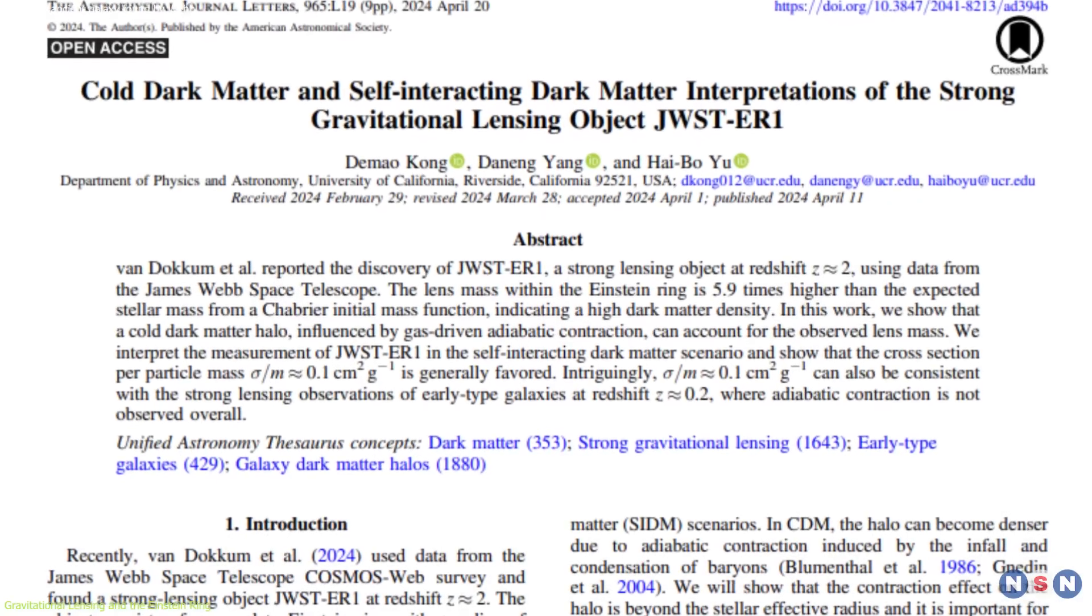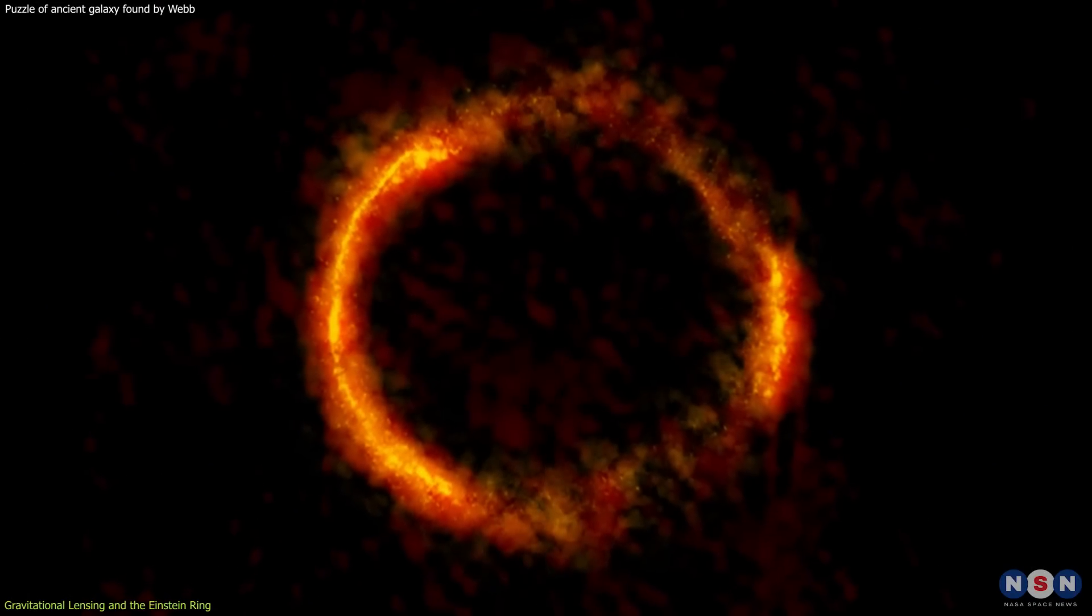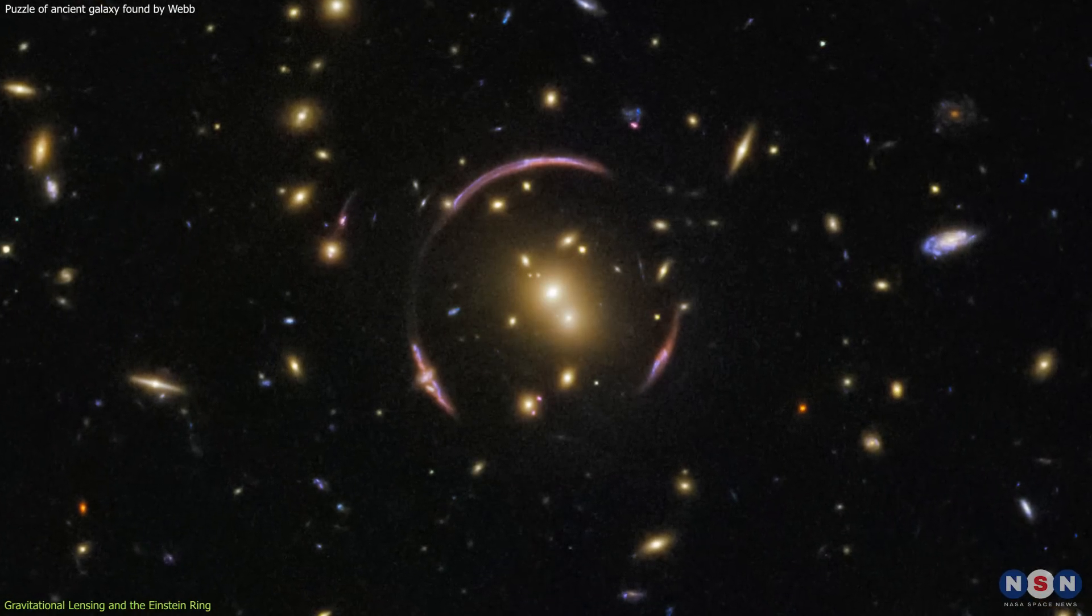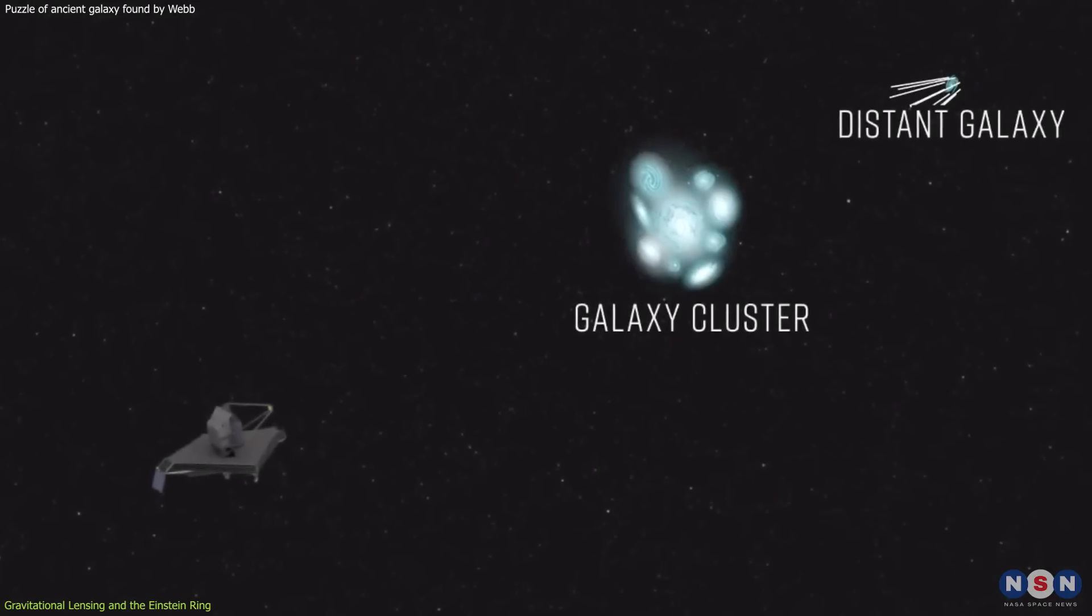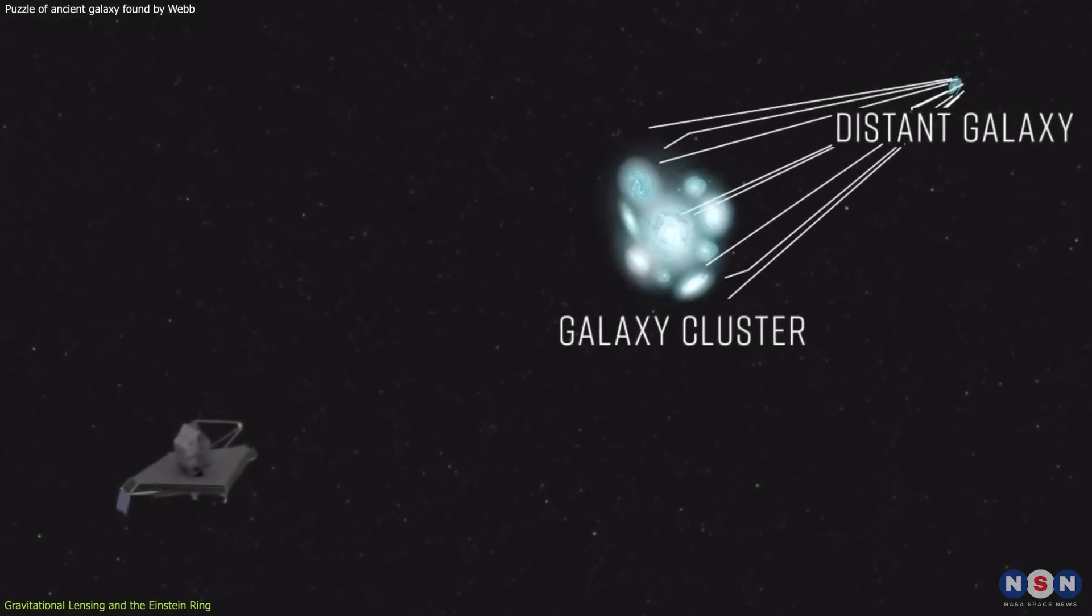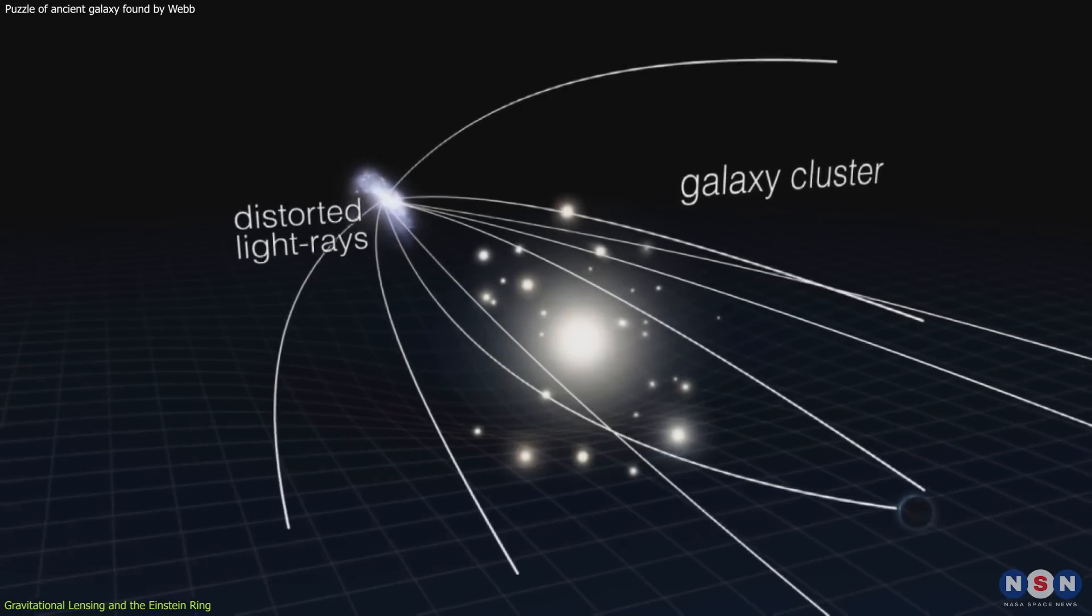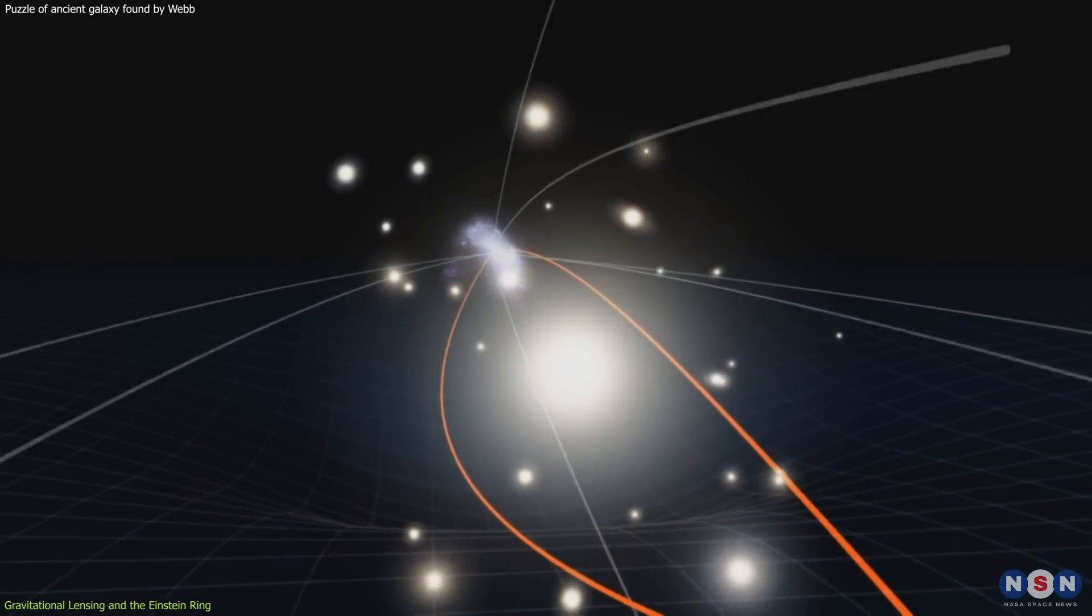The discovery is particularly intriguing because of the completeness and symmetry of the Einstein ring. Most Einstein rings are not complete, and their analysis can be hampered by asymmetries and irregularities. However, this galaxy's ring is almost perfectly circular, indicating an almost direct alignment between the observer on Earth, the lensing galaxy, and the background galaxy. This alignment not only confirms the theoretical predictions about gravitational lensing, but also enhances the precision with which astronomers can measure the mass of the lensing galaxy.